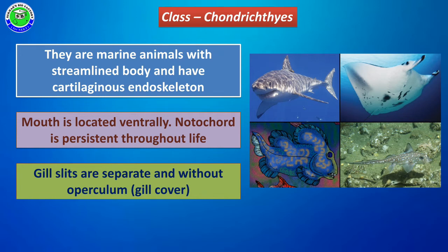For respiration, these members have gill slits on their body surface. These gill slits are separated and not covered by a covering. Generally in fishes, gill slits are covered by an operculum — a gill cover — but the operculum is completely absent in all Chondrichthyes members. They perform respiration with the help of these gill slits.